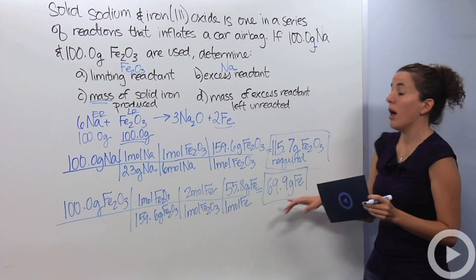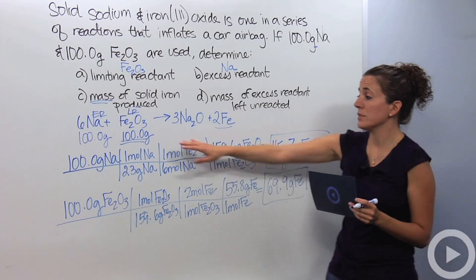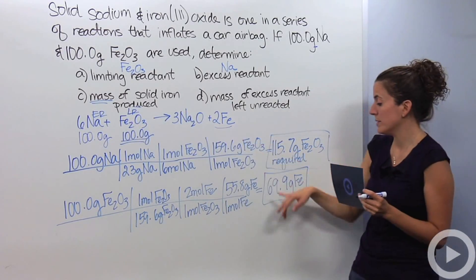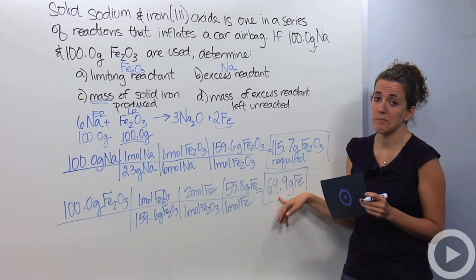So, I'm actually, with 100 grams of Fe₂O₃, I'm able to produce 69.9 grams of iron. Great.